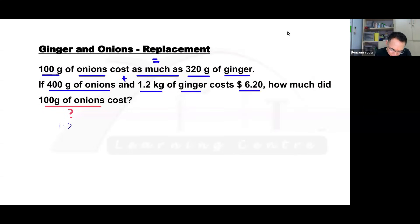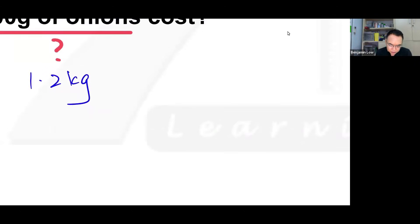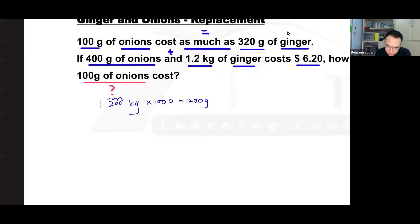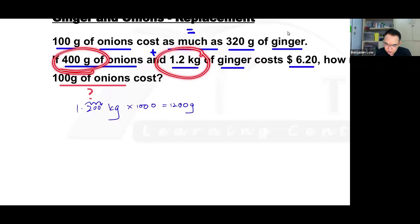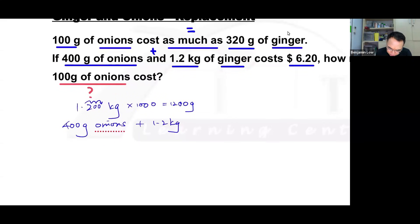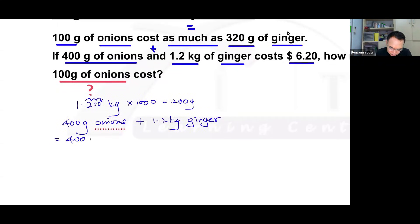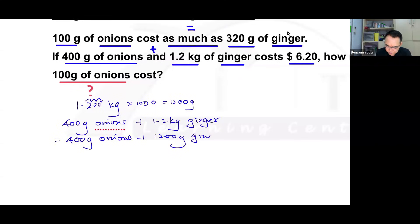So 1.2 kilograms converted into grams, you need to multiply by a thousand. And when you multiply by a thousand, this is for learning purpose, it will move three steps, giving you one thousand two hundred grams. So 400 grams of onions, 1.2 kilogram of ginger, we're going to write it like this: 400 grams of onions and 1.2 kilogram of ginger will cost the same price as 400 grams of onions and 1,200 grams of ginger.